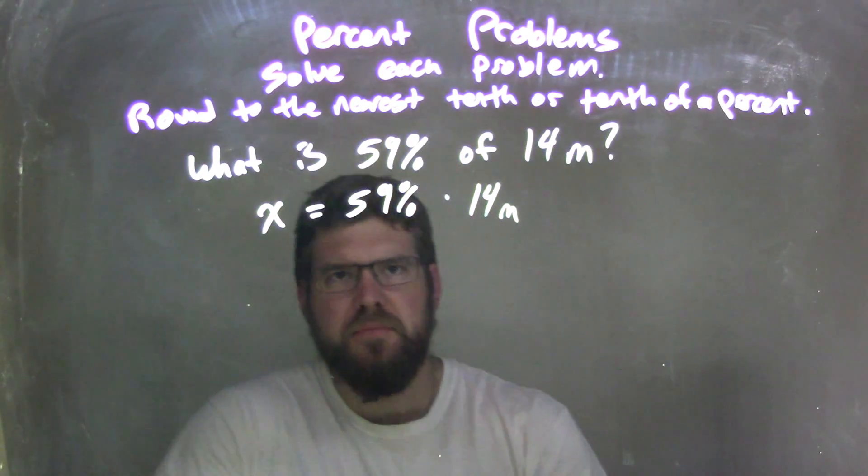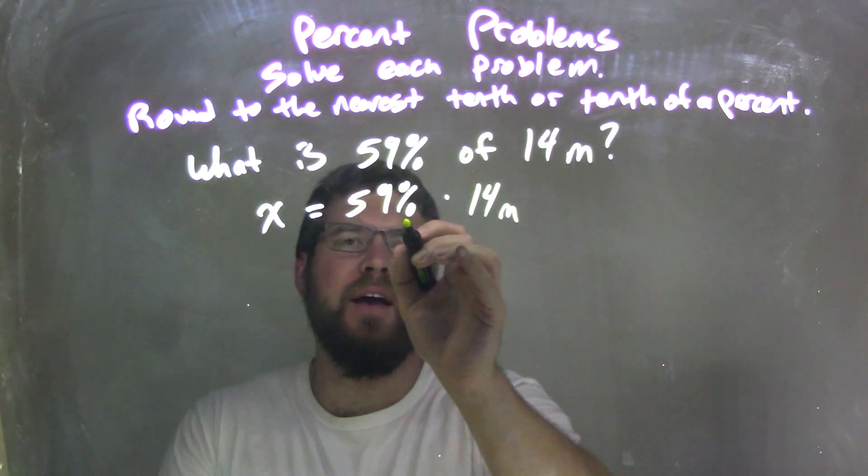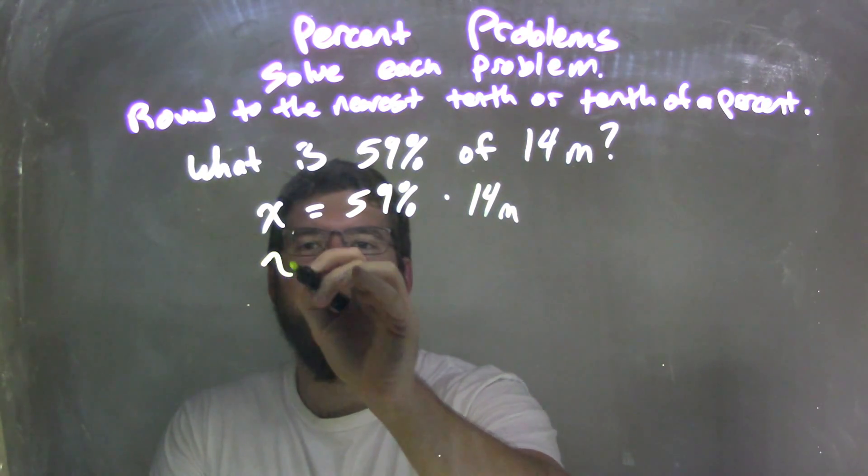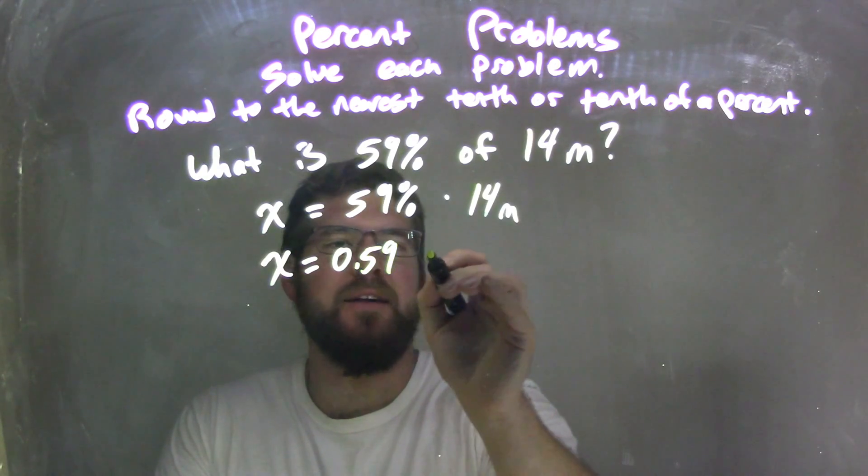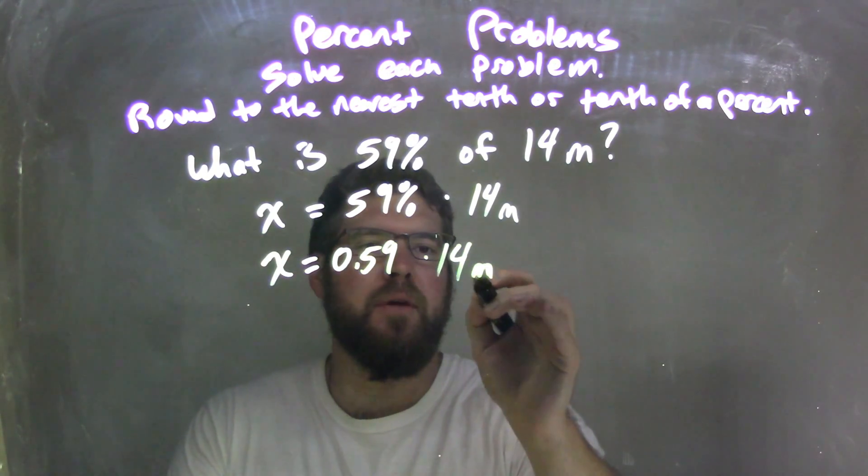Let's write this out. Let's convert the 59% to a decimal. So x equals 0.59 times 14 meters.